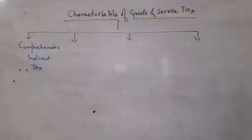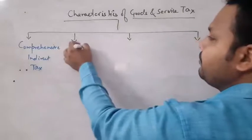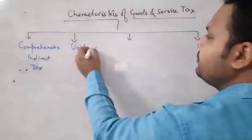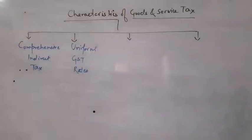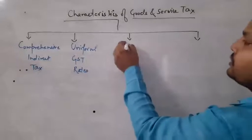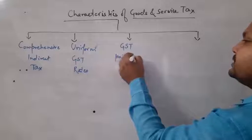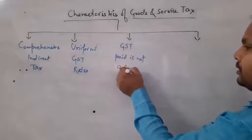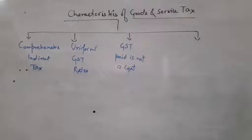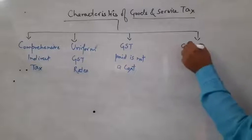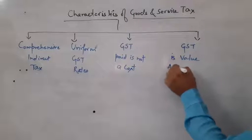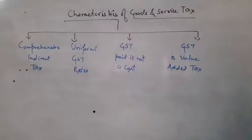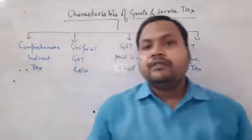The second characteristic is: uniform GST rate. The third is: GST paid is not a cost. And the fourth is: GST is a value added tax. These are the four important features of Goods and Services Tax.